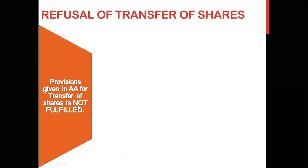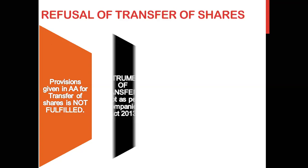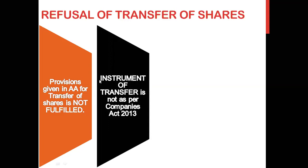Sometimes the board of directors refuses the transfer of shares. The conditions for refusal are: first, the provisions given in the articles of association for transfer of shares are not fulfilled — if those provisions are not satisfied, the board refuses the transfer. Second, the instrument of transfer is not as per the Companies Act 2013, in which case the board of directors will refuse the transfer of shares.